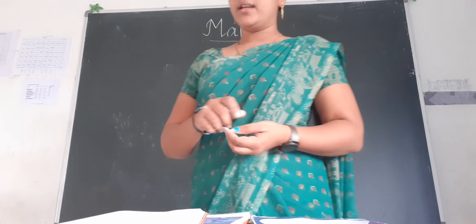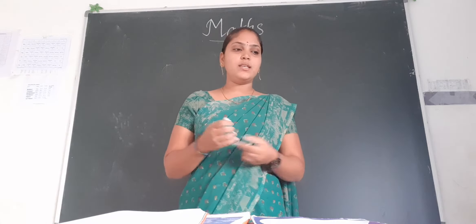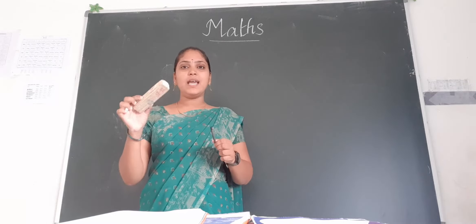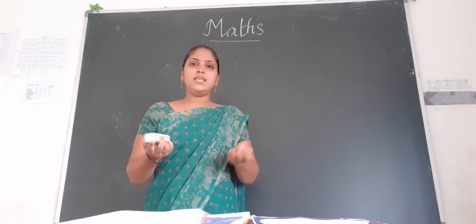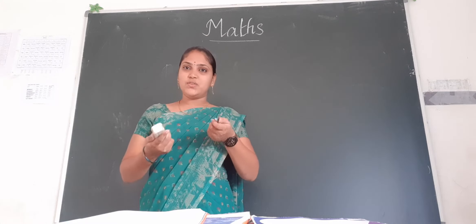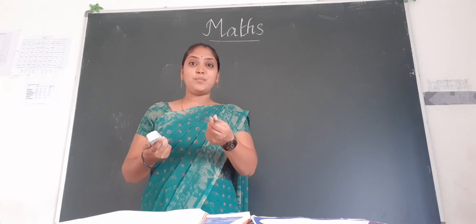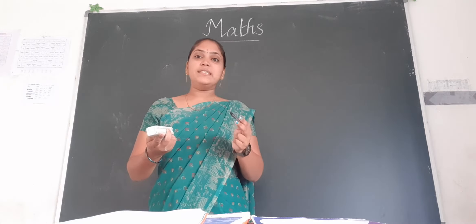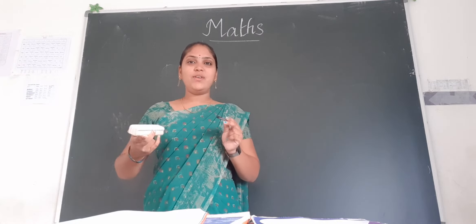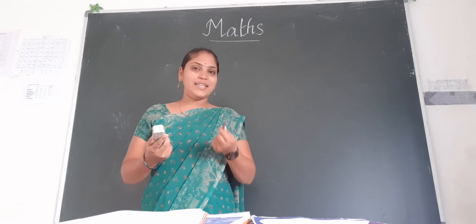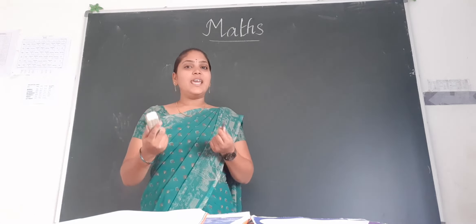Next, chapter six children, page number seventy-nine in volume one — heavy and light. I am holding two objects: one is a pencil and the second is a duster. Which one can I handle very easily children? Yes, pencil. Pencil is the lighter object and duster is the heavier object. When we compare these two items, pencil is lighter and duster is heavier.